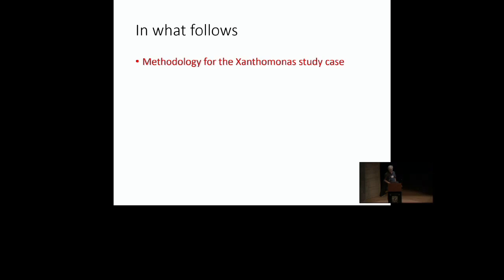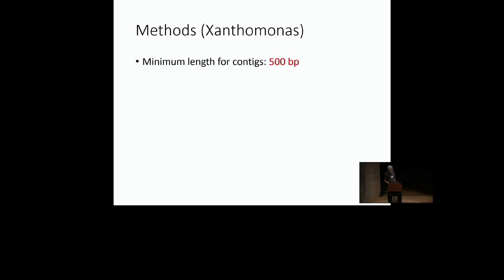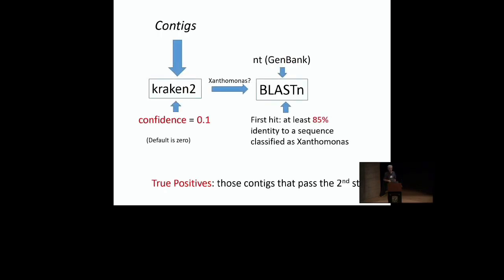In what follows, I'll show you a methodology for the Xanthomonas study case, present results, discuss issues that came up in that work which led me to revise the methodology, and then present new results for other targets. Starting with the methods for Xanthomonas: I established a minimum contig length of 500 base pairs — if you go below 500 base pairs, the signal becomes too weak and it's just not worth it. The taxonomic classification methods are really simple, based on just two steps.